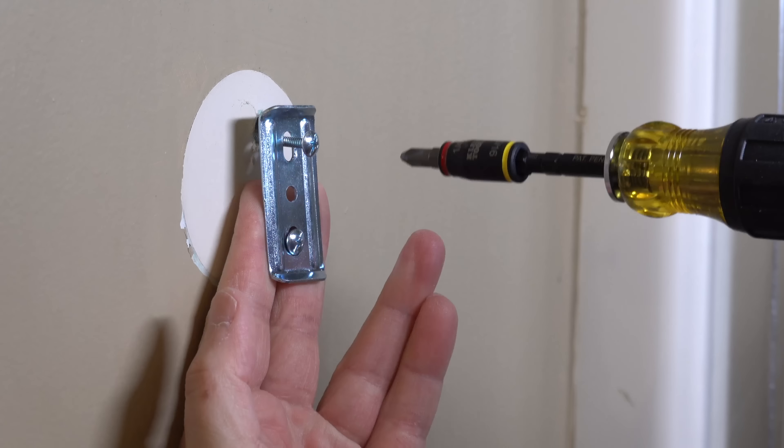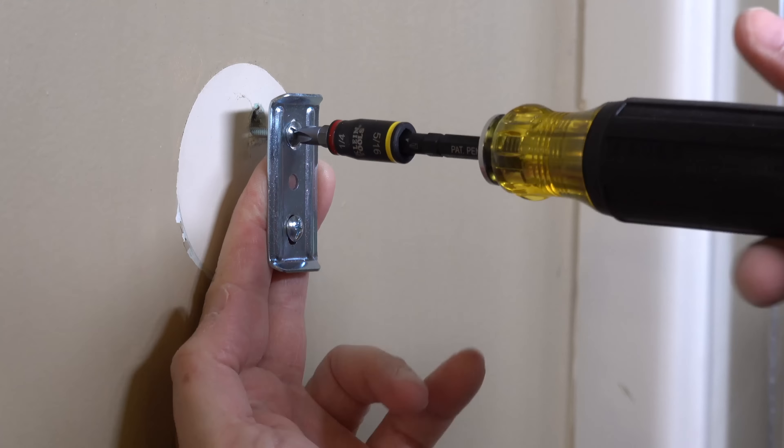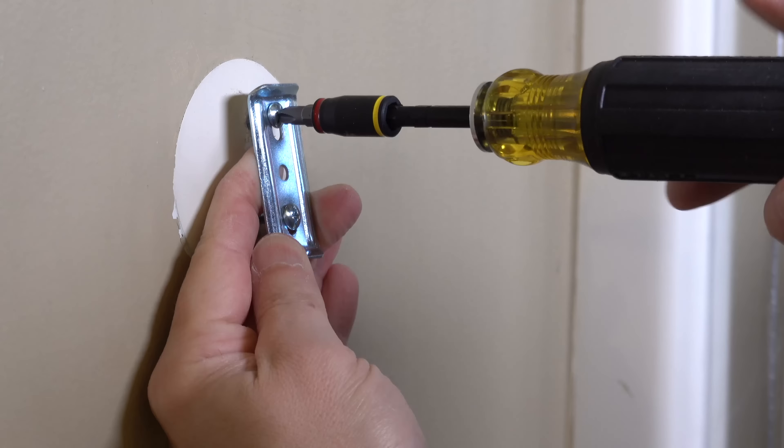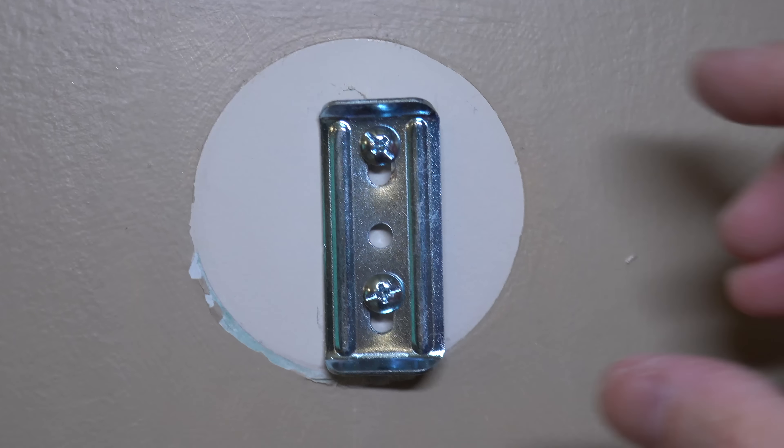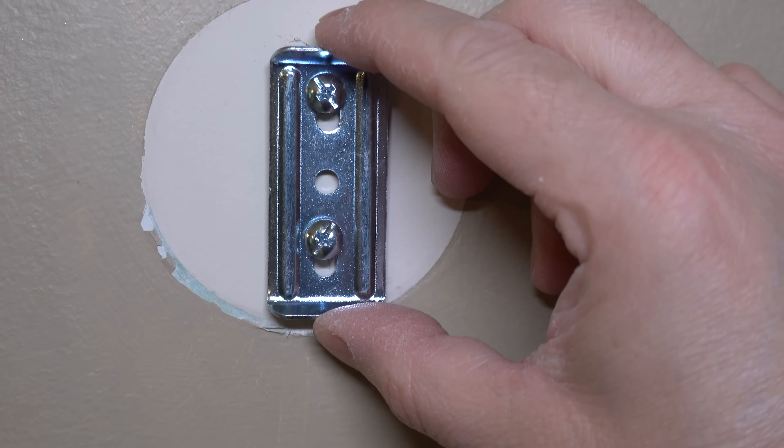And I'd recommend putting these in by hand. You don't want to strip the screw out and it's just going to give you more control to use a hand screwdriver like this. And as you get really close to the wall you're not going to be able to put your finger behind it so just grab hold of the sides of the bracket.